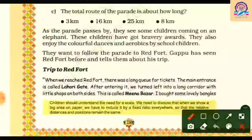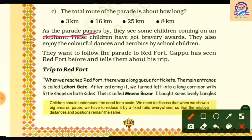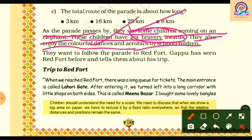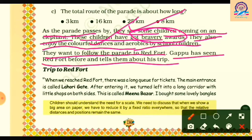As the parade passes by, they see some children riding on an elephant who have received a bravery award. They also enjoy the colorful dances and aerobics performed by school children. Now they want to follow the parade to the Red Fort, and Gappu, who has seen the Red Fort before, tells them about his trip.